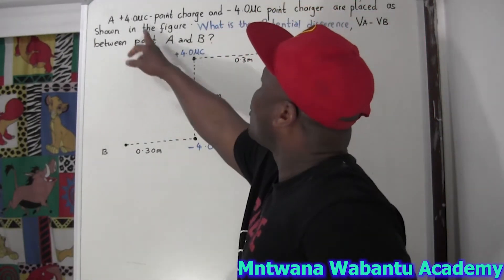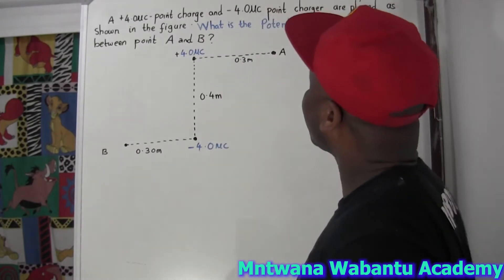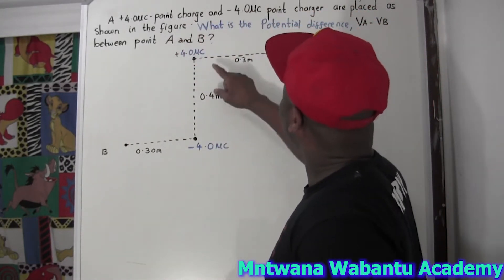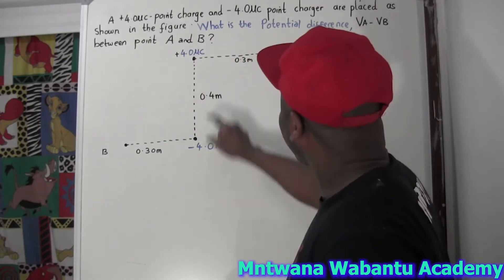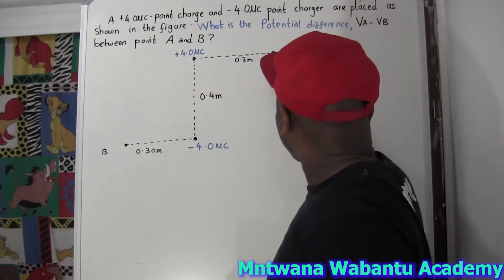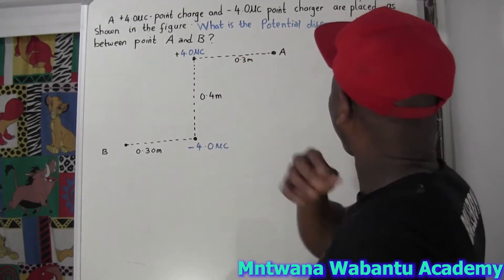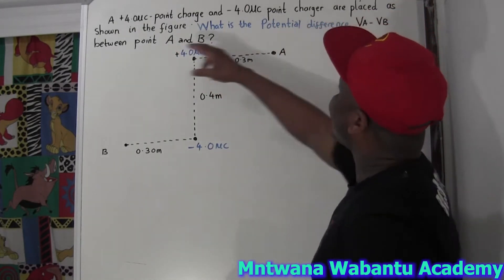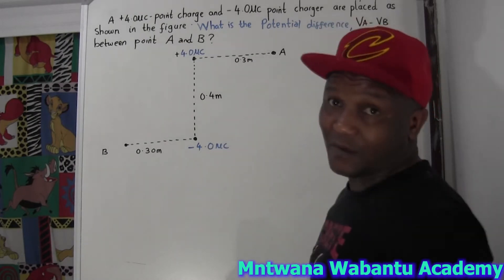Let's say we have a 4 microcoulomb charge. Coulomb is a unit of charge — we have a positive charge and a negative coulomb. So we have a positive and negative at this point, and here we have point A. We don't know the charge at point A, but the distance from these to there is 0.3, and here is also 0.3. The charges have been placed in the figure below — what is the potential difference?